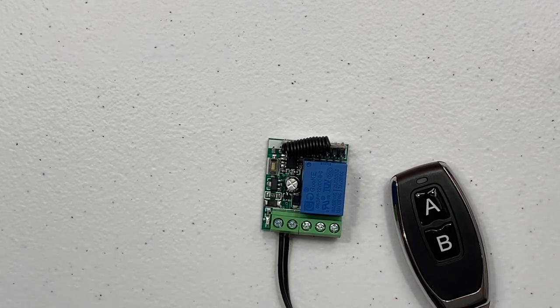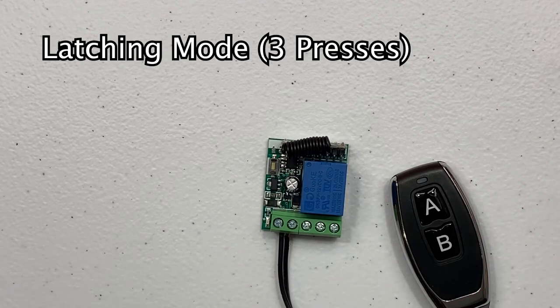To set the relay to latching mode, repeat the same procedure as before but press the learn button three times.